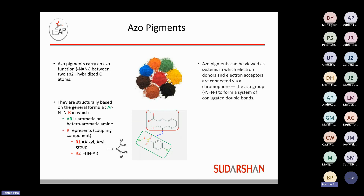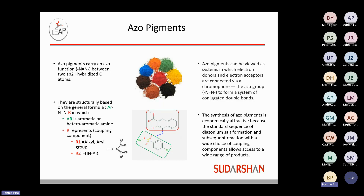It's this coupling agent that allows for the development of a lot of shades and a lot of property developments for the chemistries. The azo pigments are electron donors and acceptors connected through that nitrogen double bond, which is the chromophore. The synthesis of azo pigments is very economically attractive because it's a very straightforward process — a standard sequence for all azo chemistries that starts out with the diazonium salt formation. The choice of reaction with the coupling agents allows for that wide range of products to be developed.